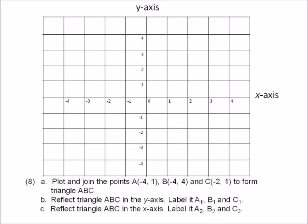Number eight A: plot and join the points A(-4,1), B(-4,4), and C(-2,1) to form triangle ABC. B: reflect triangle ABC in the y-axis and label it A1, B1, C1. C: reflect triangle ABC in the x-axis and label it A2, B2, and C2. First, plot the points A(-4,1), B(-4,4), C(-2,1), join them together to form the triangle, and label it.